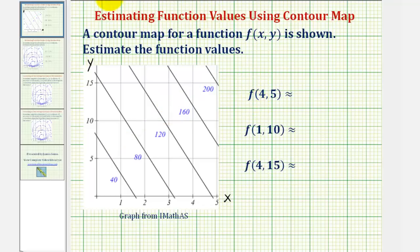Now for each function value, the first coordinate is the x value, and the second coordinate is the y value. So to determine the value of f of four comma five, we'll first locate the point four comma five on the coordinate plane, then use the level curve to estimate the function value.